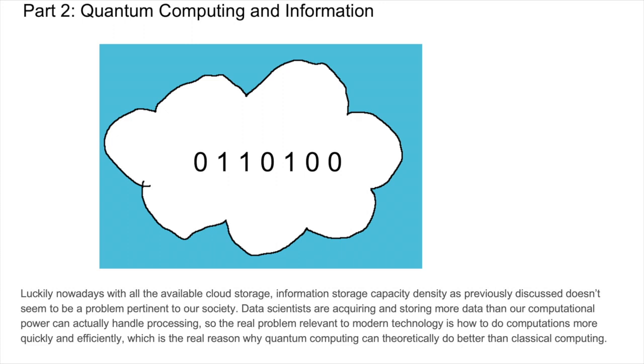Luckily nowadays, with all the available cloud storage, information storage capacity density as previously discussed doesn't seem to be a problem pertinent to our society. Data scientists are acquiring and storing more data than our computational power can actually handle processing. So the real problem relevant to modern technology is how to do computations more quickly and efficiently, which is the real reason why quantum computing can theoretically do better than classical computing.